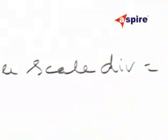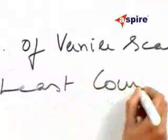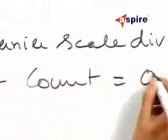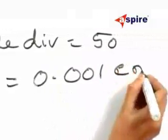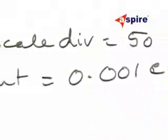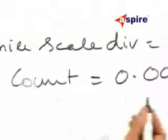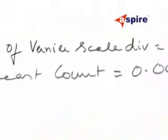The least count of this is given as 0.001 centimeters. What is the value of main scale division? We have to find out. What is the least count formula?